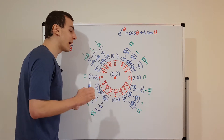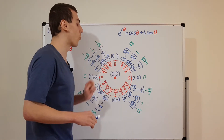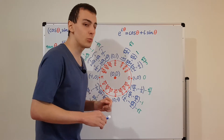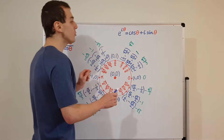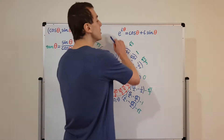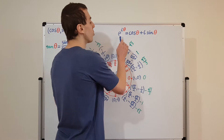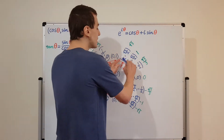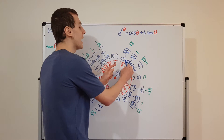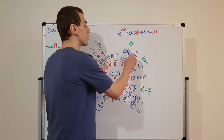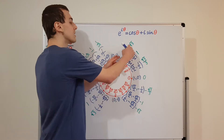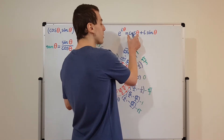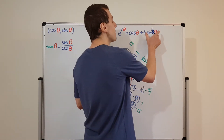The unit circle, by definition, has a radius of 1. One of the very important things we can do with the unit circle is use Euler's formula to represent all of the points on the unit circle. So we can take this representation over here, where we have a number on the left, comma, a number on the right, and we can turn that into this representation. This is a real component, and this is an imaginary component.